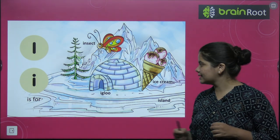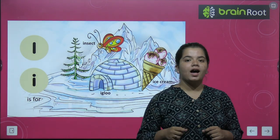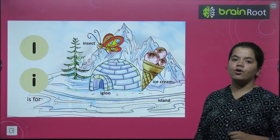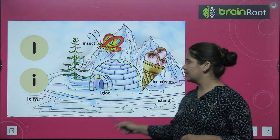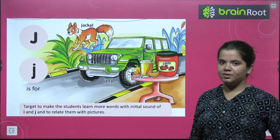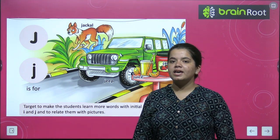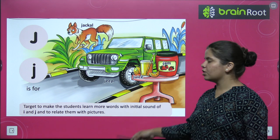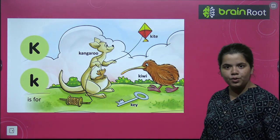I for insect, I for igloo, I for ice cream, I for islands. Next hamare paas hai J. J for jackal, J for jeep, J for juice, aur J for jam bhi hota hai. Thik hai bacho.